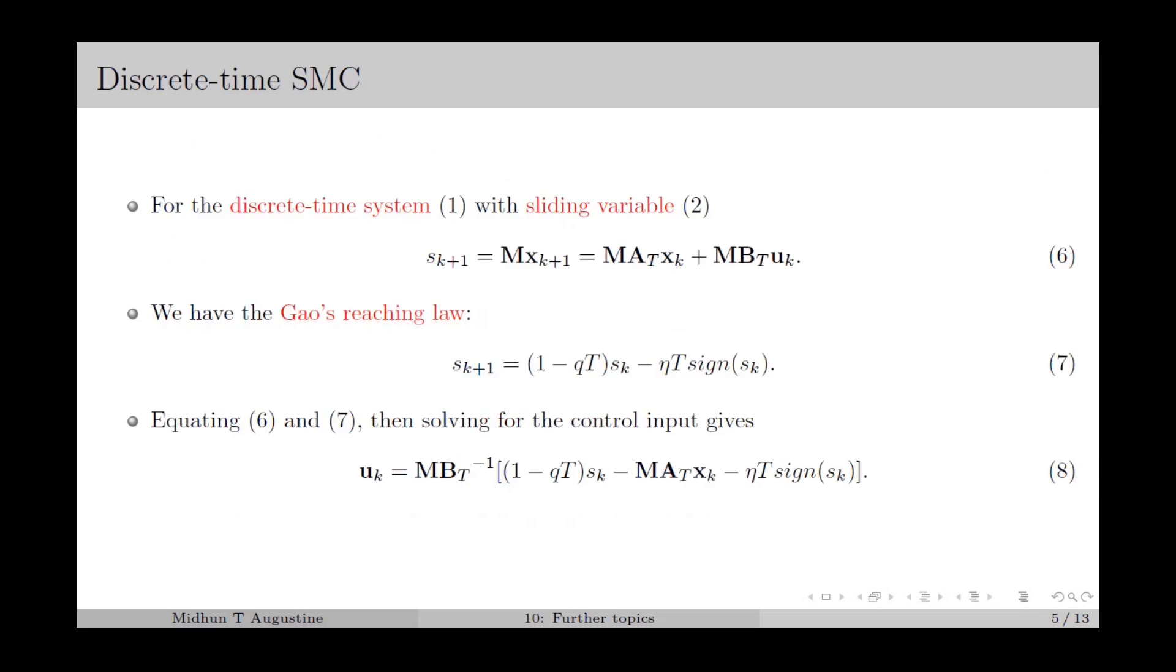We define the sliding variable in discrete time as s_k = M·x_k. This gives s_{k+1} = M·x_{k+1}, where we can replace x_{k+1} with the state equation.